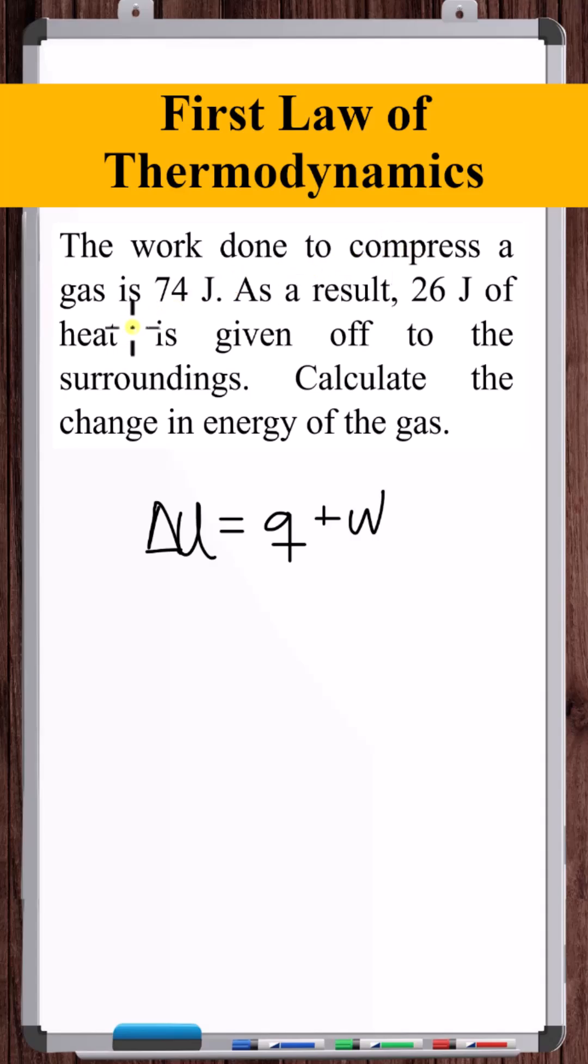The work done to compress the gas is 74 joules. Work is done on the system, so work is positive 74 joules. 26 joules of heat is given off to the surroundings. Heat leaves the system, so q is negative 26 joules.